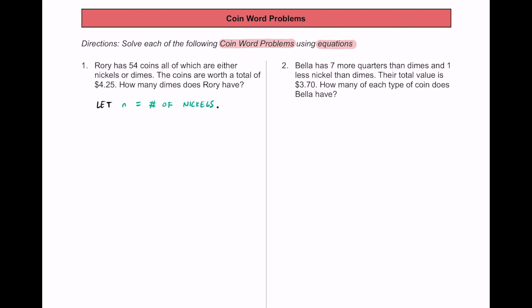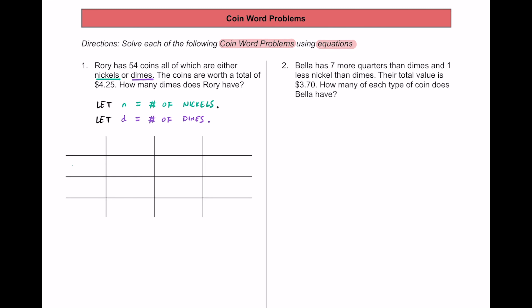Let's go ahead and define our variables first. We're going to let n equal the number of nickels, and then we'll let d represent the number of dimes. Once we do that, I recommend setting up a quick table to help us organize.